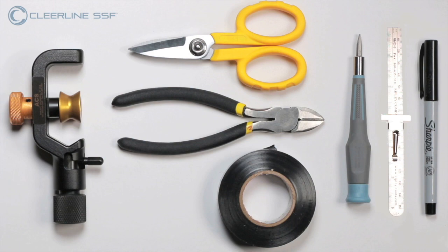To prepare this cable for termination, you'll need an armored cable slitting tool, fiber optic cutting shears, a flathead screwdriver, a pair of side cutters, tape, a ruler, and a marker.